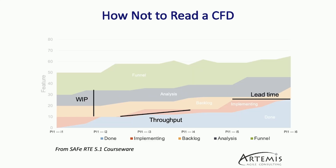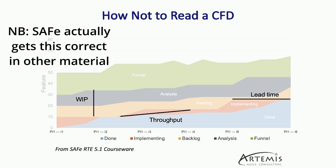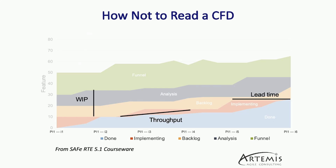This is an example of how not to read a CFD. This is actually from the Scaled Agile Framework RTE class, showing the program Kanban for an Agile Release Train or a team of teams. What they're trying to show here is work in progress on the left, yet it doesn't include the implementing stage. They're showing throughput and then lead time — which actually is not lead time, it's cycle time. Lead time is the time it takes from an item coming into our backlog, i.e., requested by the customer, until we deliver it. Cycle time is the amount of time we work on an item. Be cautious — there are some bad representations out there of what CFDs will tell you.